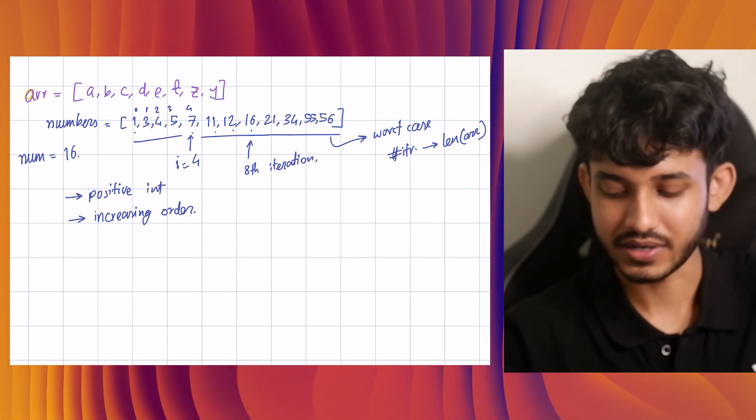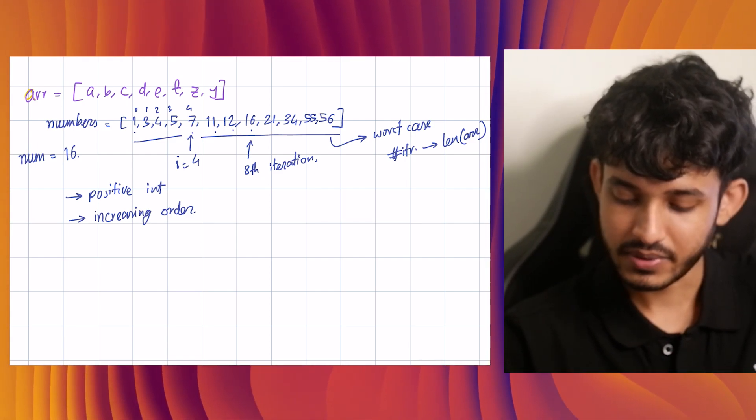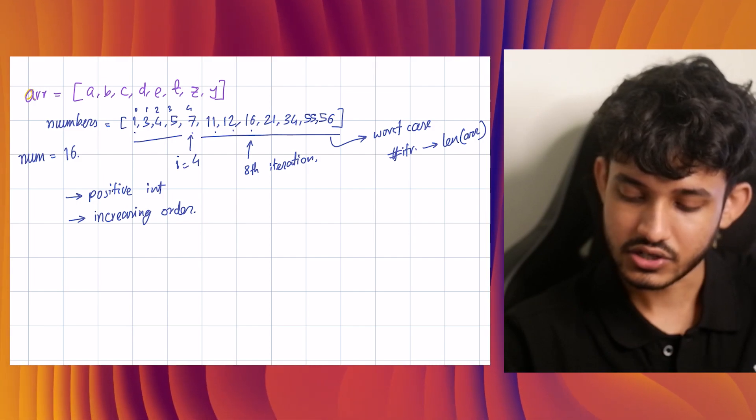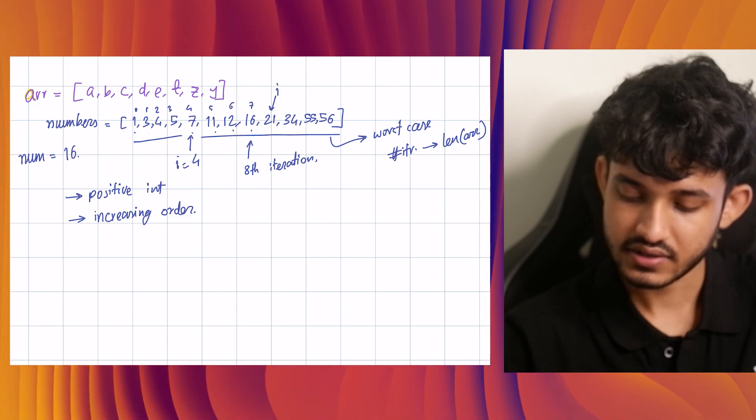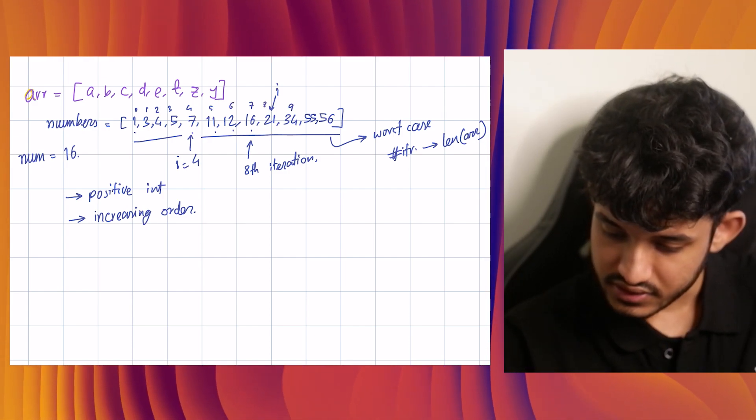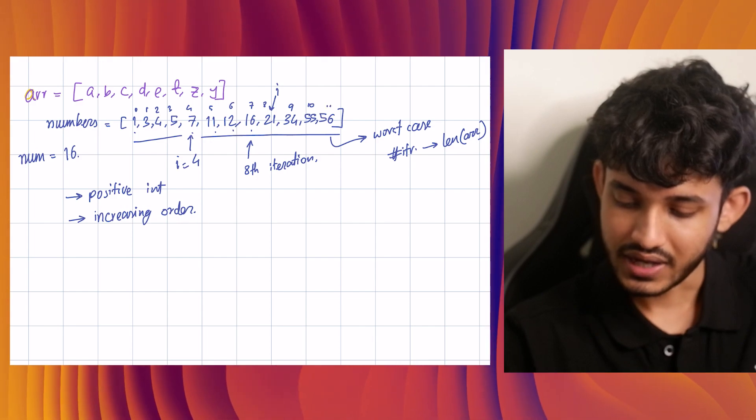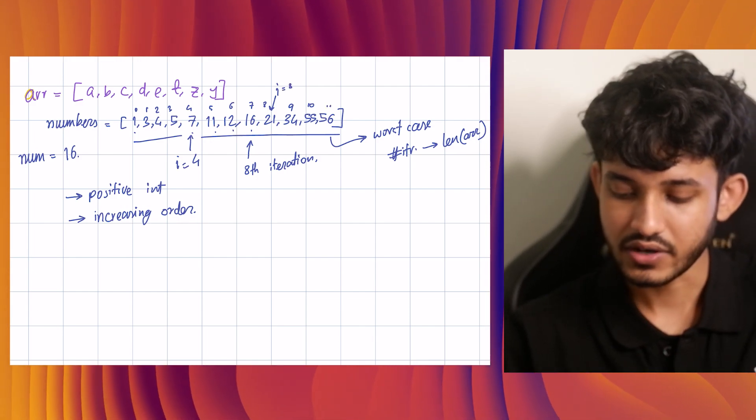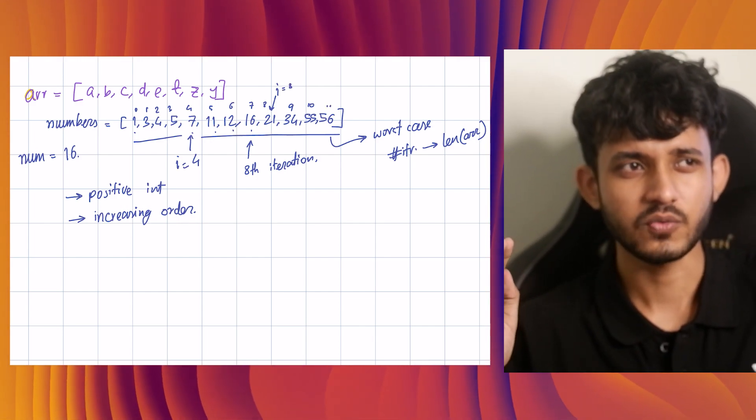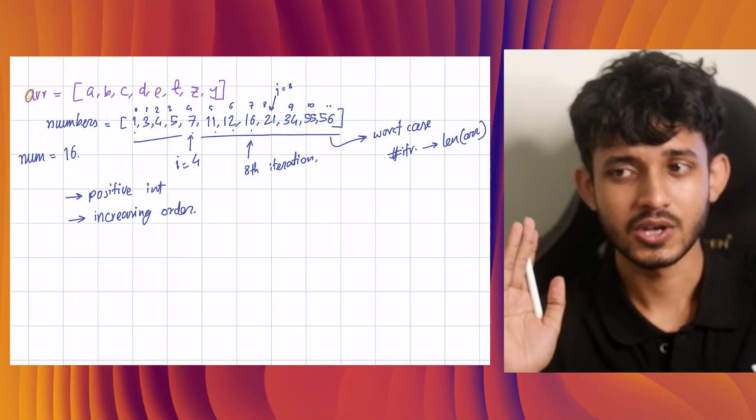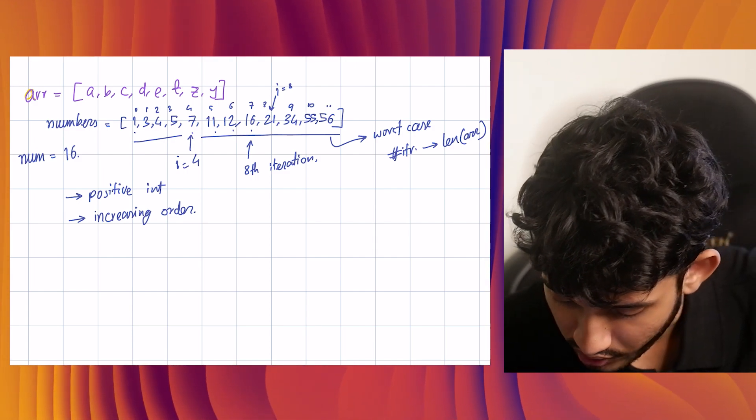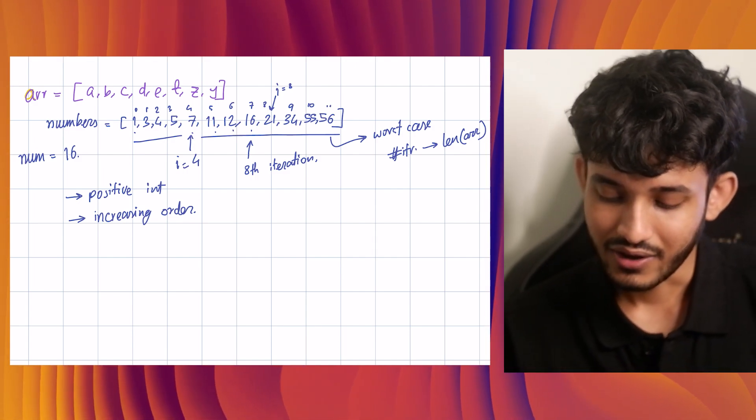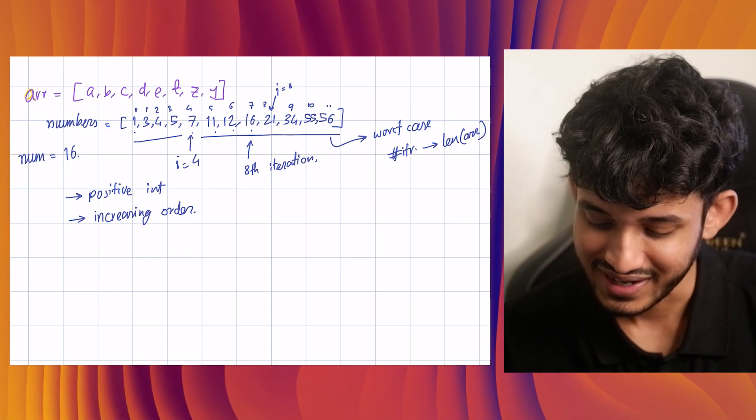Now we take another random element in this range, maybe now it lands at 10. 21. Now it is at 21, which is like five, six, seven, eight, nine, 10, 11. Yeah. So i equals to eight is a random value. We find 21. And now we see, okay, 21 is greater than 16. So it cannot be after 21. So it has to be before 21. Now our worrying area, our area of concern becomes a lot less.